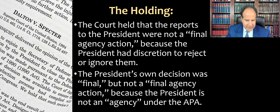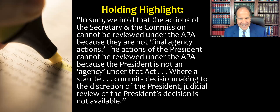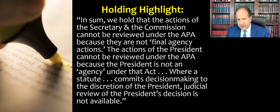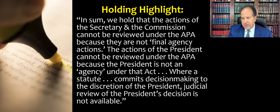I pulled out a quote from the opinion for those of you who like to highlight in your casebooks — this captures some of the court's essential reasoning. 'In sum, we hold that the actions of the secretary and the commission cannot be reviewed under the APA because they are not final agency actions. The actions of the president cannot be reviewed under the APA because the president is not an agency under that act. Where a statute commits decision-making to the discretion of the president, judicial review of the president's decision is not available.' That's a pretty significant statement — take a minute to let that sink in. And that concludes our lecture about the case Dalton v. Spector.